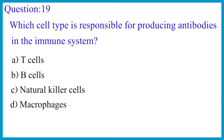Question number 19. Which cell type is responsible for producing antibodies in the immune system? The correct answer is option B: B cells.